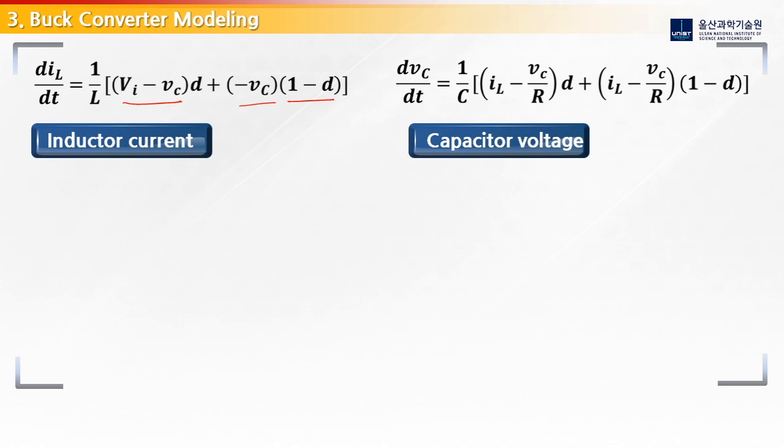So this is our basic equation and we can try to simplify it. Let's first just write the terms for Vi. We get 1 over L, Vi, and that's multiplied by D. And now let's put all the terms together for Vc here. We get 1 over L, we have a negative Vc, and we'll get 1 minus D, plus D, which leaves us with just 1. So let's write this in our final form: 1 over L, Vi times D, minus 1 over L Vc. So this is our equation for our inductor.